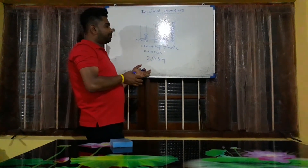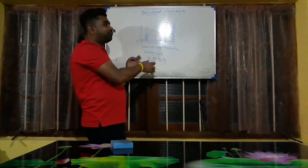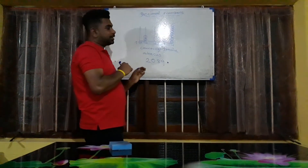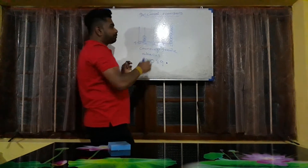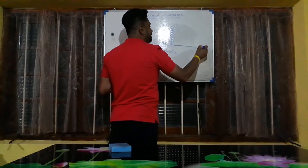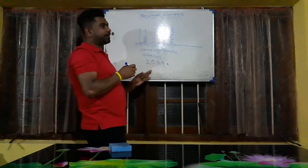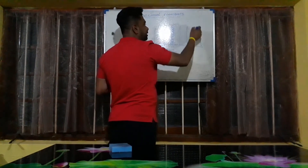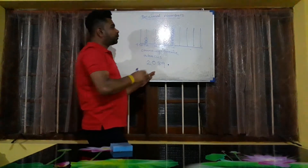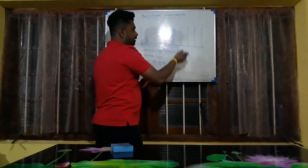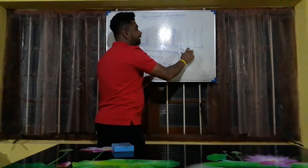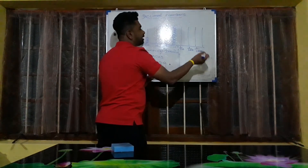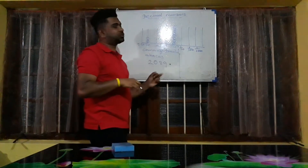This is the whole number part. When we talk about decimal numbers, the decimal point comes here. From this point, if I extend this line, these are the places for the decimal digits. Here we call them 1 over 10, 1 upon 100, 1 upon 1000 — like that we can name the strings.